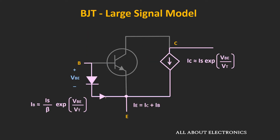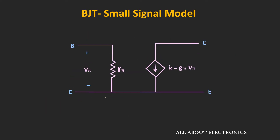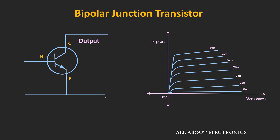In the last couple of videos, we have seen the large signal and the small signal model of the BJT. During the discussion of these models, we have assumed that when the BJT is operating in the forward active region, then for the fixed value of the base-emitter voltage, even if we increase the voltage between the collector and the emitter terminal, the collector current remains constant.